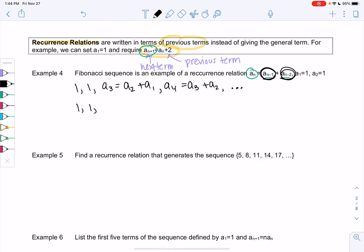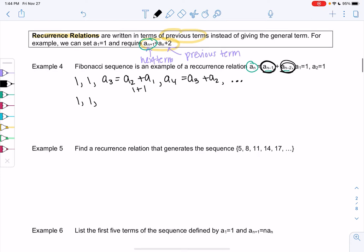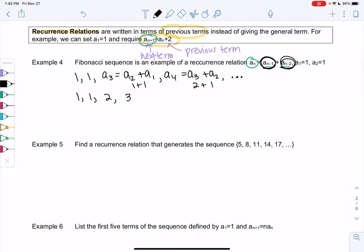We'll see a pattern shortly. So we get 1, we get 1. So a_2 plus a_1 would be 1 plus 1 or 2. So then a_4 would be 2 plus 3, or sorry, 2 plus 1, which is 3.